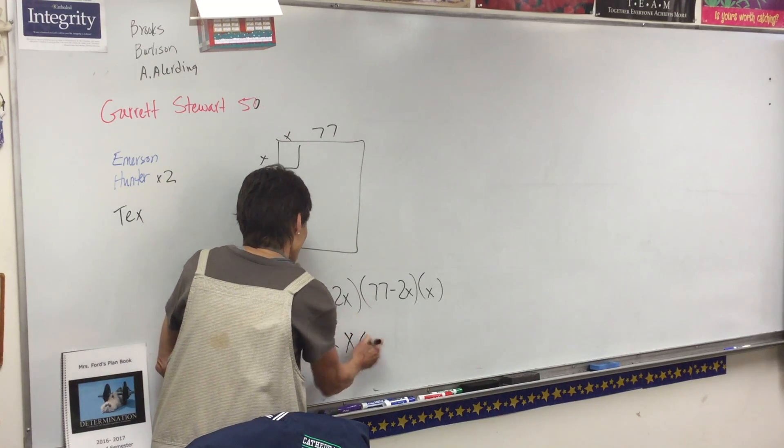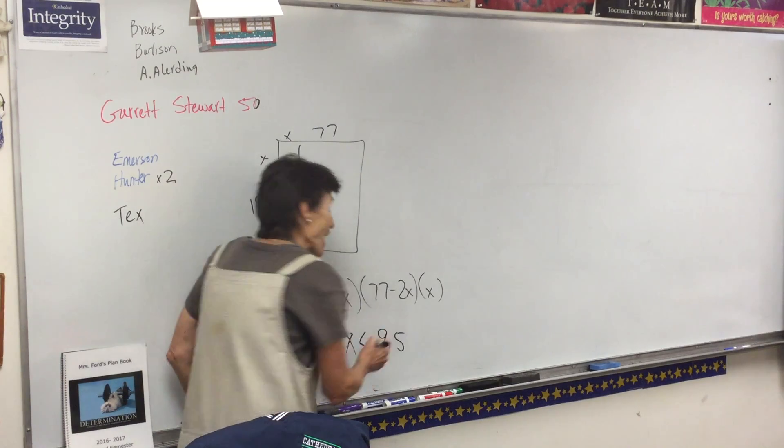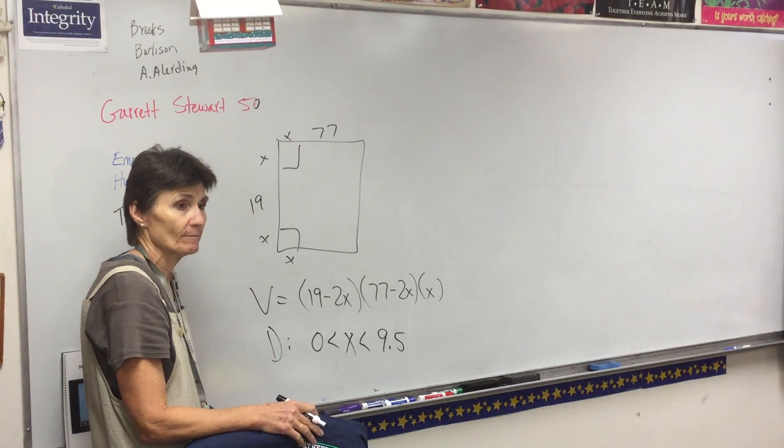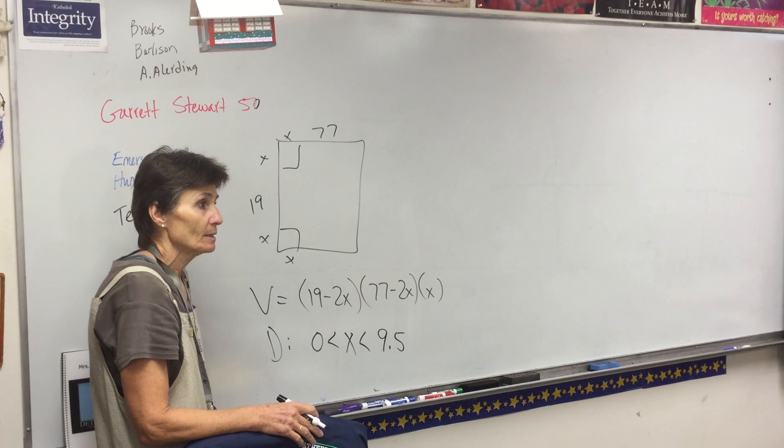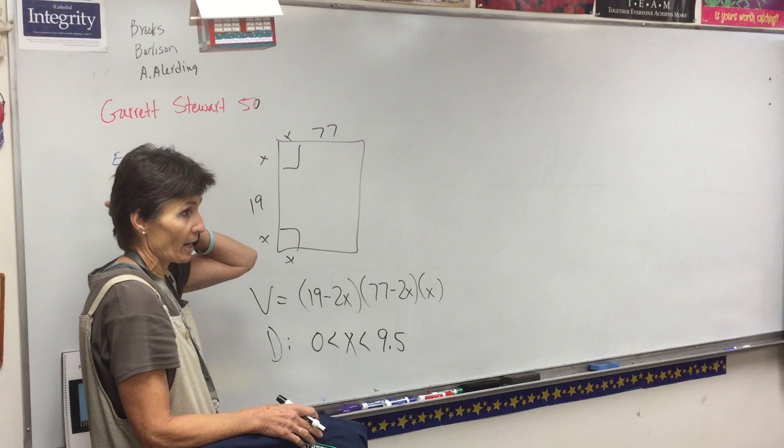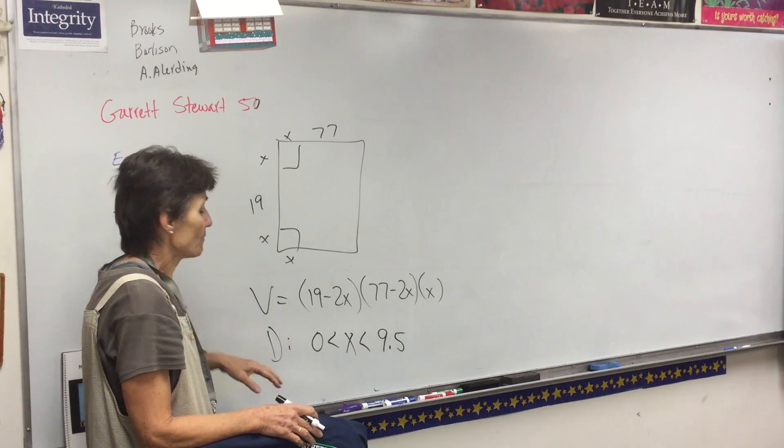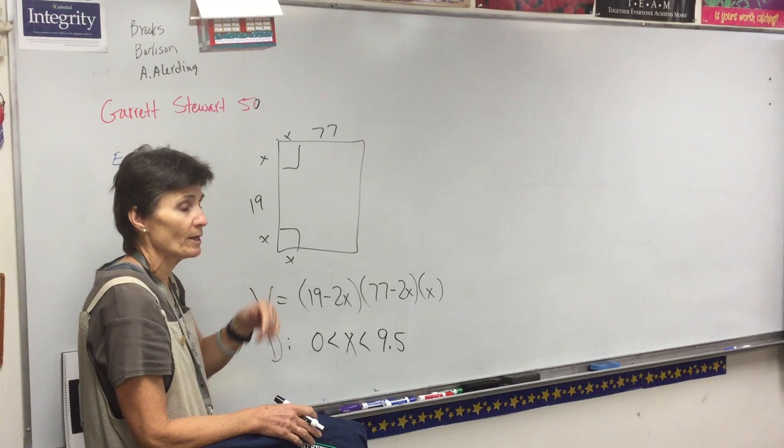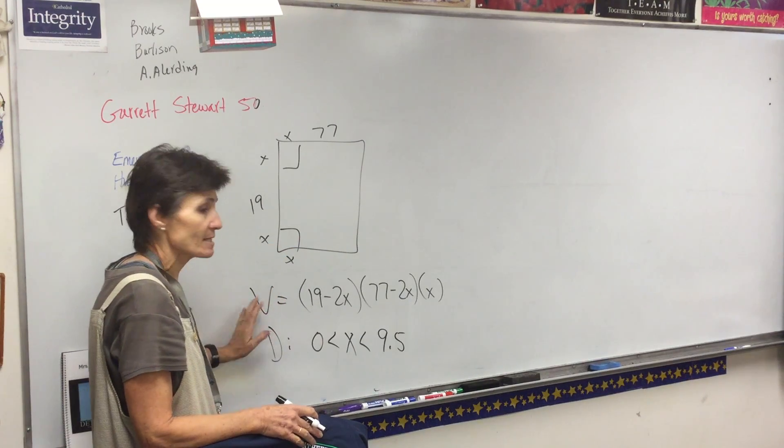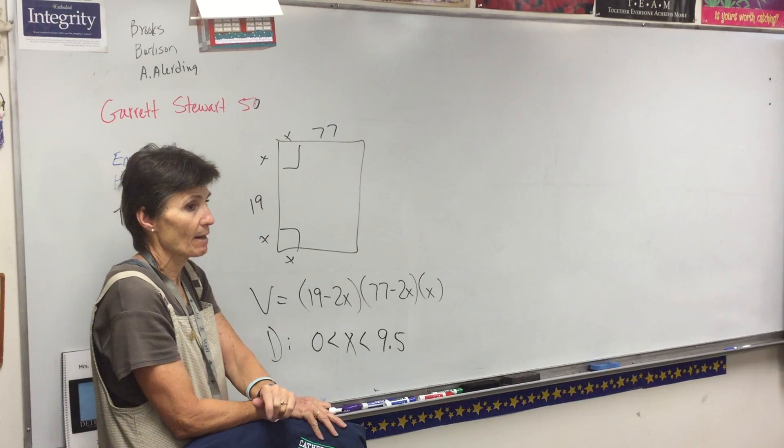Then you've got to put in your new domain. What is your new domain? 0 to 9.5, half the smaller dimension. And then we're going to type it in. If you've got calculator issues, find a friend or come to tutoring. But that's the setup right there. Who else might miss something? Anybody else have a different problem you might miss?